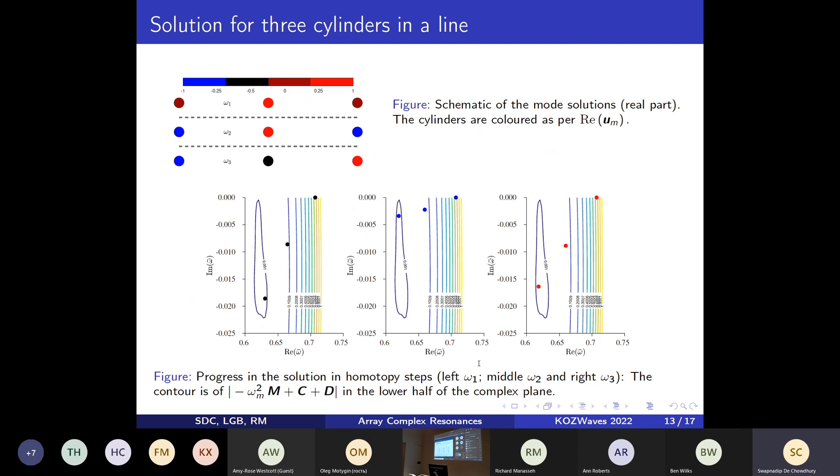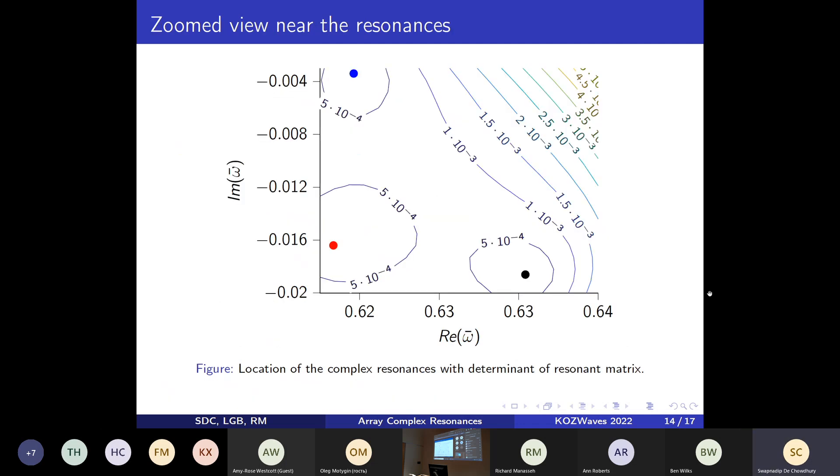This is clearly verified when we zoom in near the complex resonances. We can see that we are able to capture all these three poles quite reliably using this method.